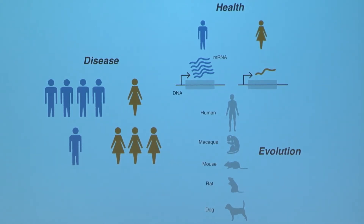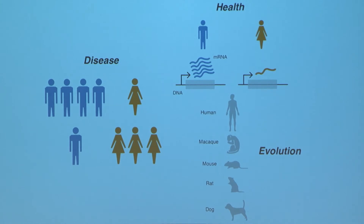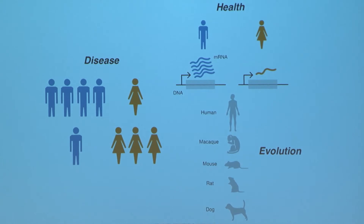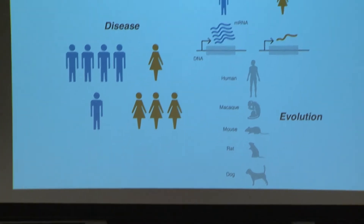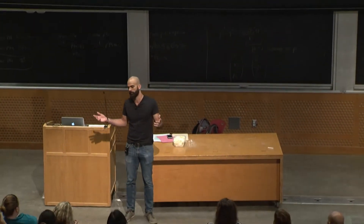How can we understand these sex differences in disease? Well, think of the disease state as a car crash. It can be hard to figure out what went wrong just by inspecting the wreckage. And maybe we could learn more by looking earlier at sex differences in the healthy state. However, we still lack a comprehensive description of how healthy males and females differ at a molecular level.